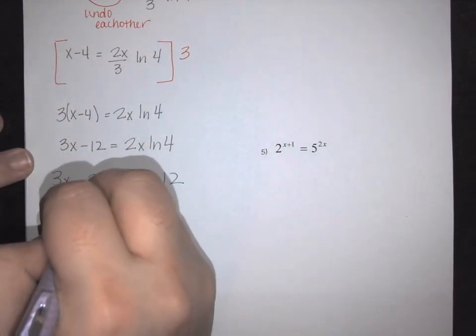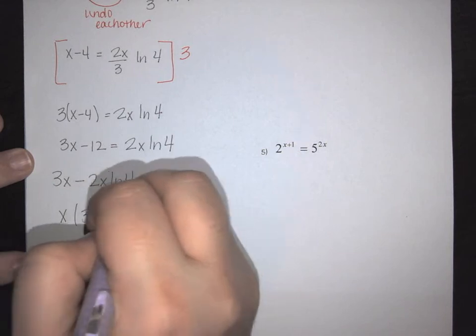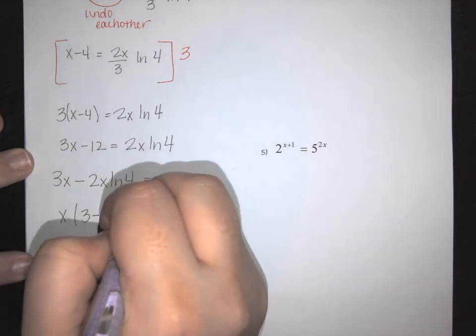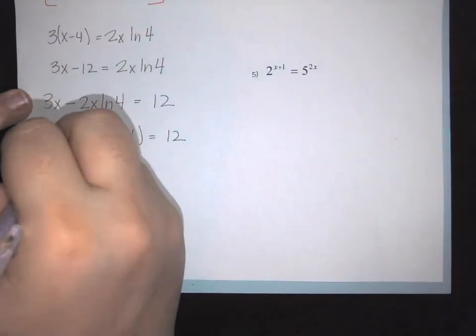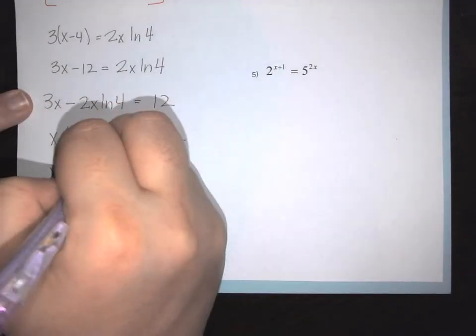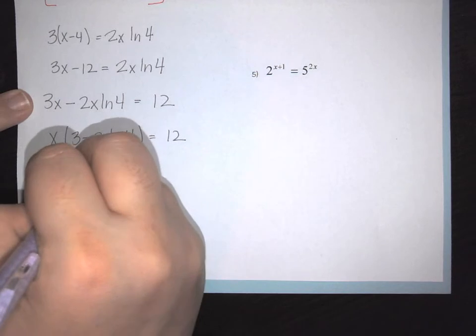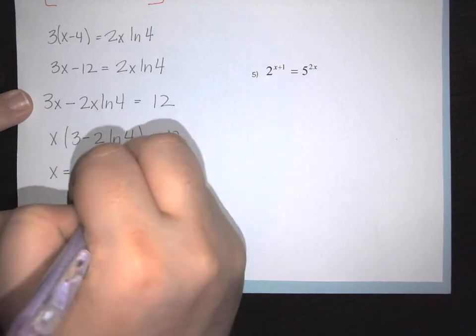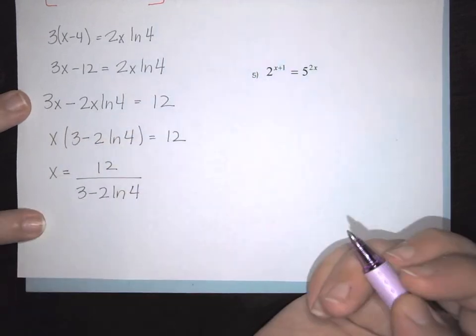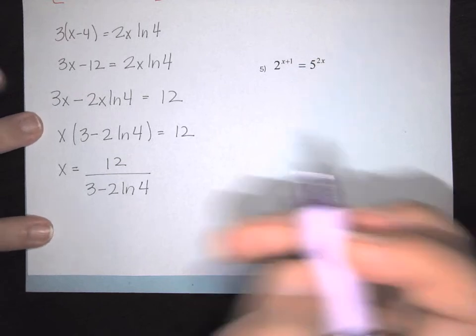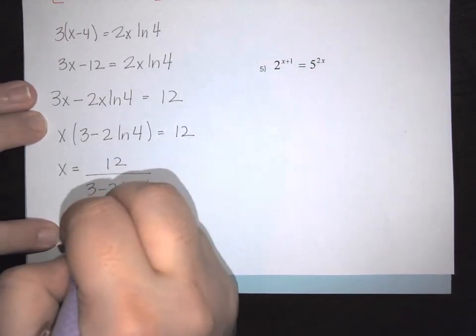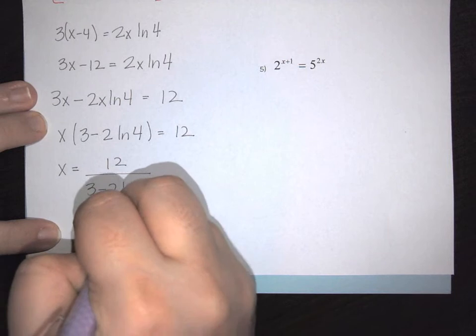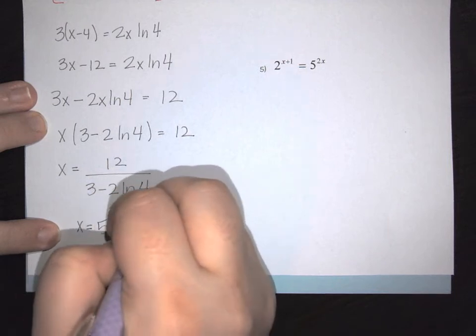Pulling the x out leaves x times (3 minus 2 natural log of 4) equals 12. Getting x by itself: x equals 12 over the quantity (3 minus 2 natural log of 4). Evaluating in a scientific calculator gives approximately 52.768.